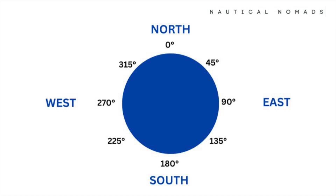Moving clockwise, we come to east at 90 degrees — exactly one quarter of the way around the compass from north. Next is south, located at 180 degrees, halfway around the circle from north. Finally, we reach west at 270 degrees, three quarters of the way around. These main cardinal points are spaced evenly, dividing the circle into four equal 90-degree sections.